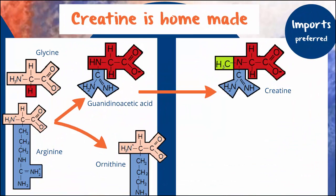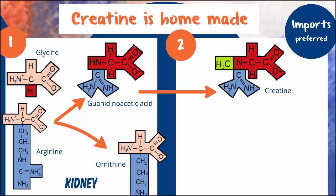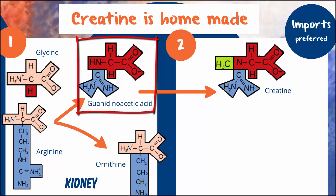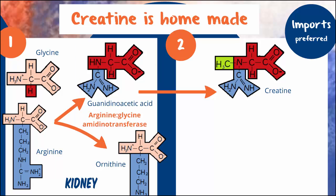The creatine supply to the body is guaranteed — it's home made. Production is a two-step process. Step one takes place in the kidney, involving bringing together the amino acids glycine and arginine to create guandinoacetic acid. The enzyme that does this is Arginine Glycine Amidinotransferase. Step two takes place in the liver. The enzyme here is guandinoacetic acid methyltransferase, which pops a methyl group onto the guandinoacetic acid to make creatine.